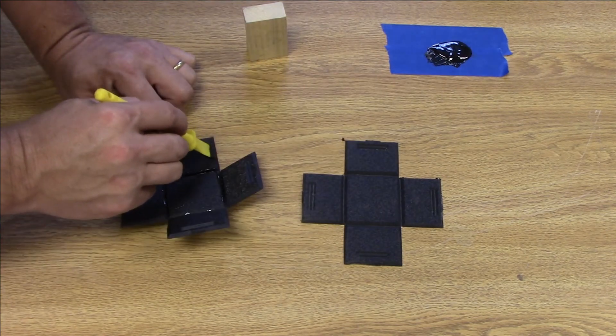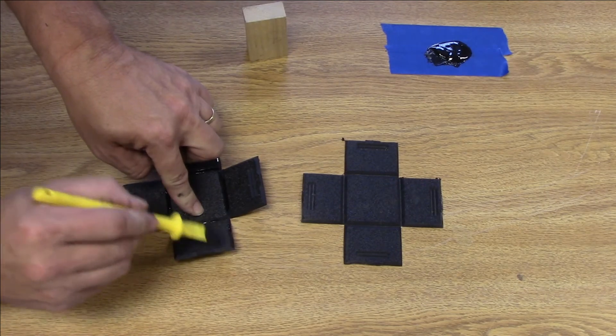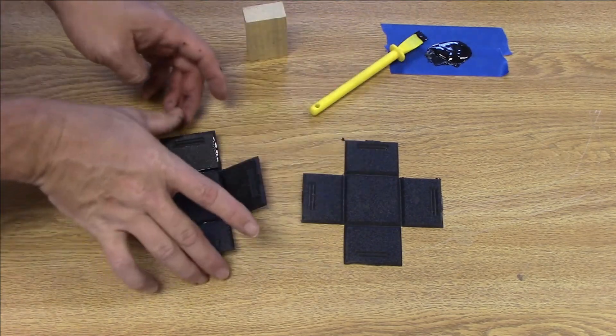It's important to heat the blanks to make them more malleable. Initially I used a heat gun, but then discovered that warming them in an oven was more efficient.